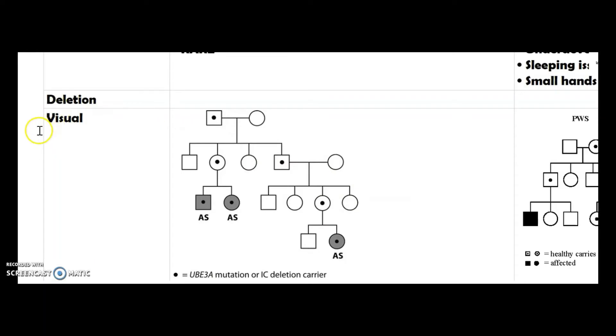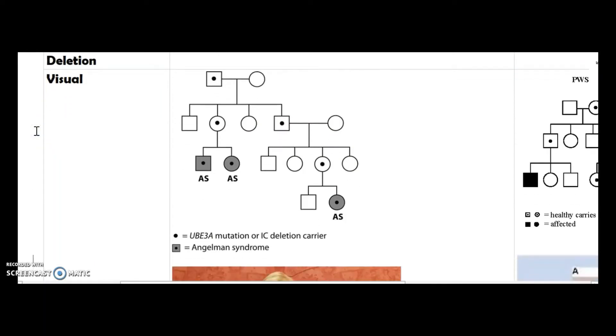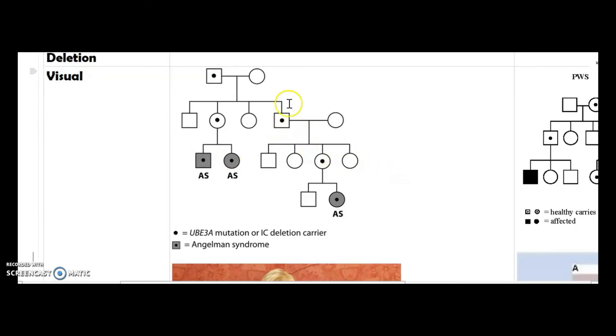Whether you're familiar with pedigrees or not, hopefully it'll help you if I explain it a bit. How pedigrees work are: you have all these squares and circles. The squares are males, circles are females. The dot means that they're a carrier of a certain mutation or have the mutation. The shaded ones are the ones that are affected.